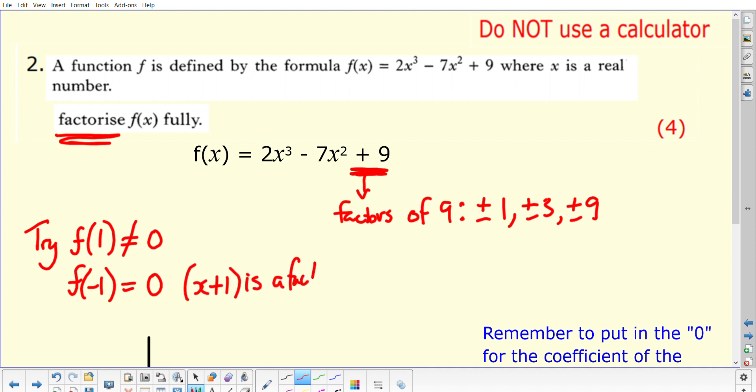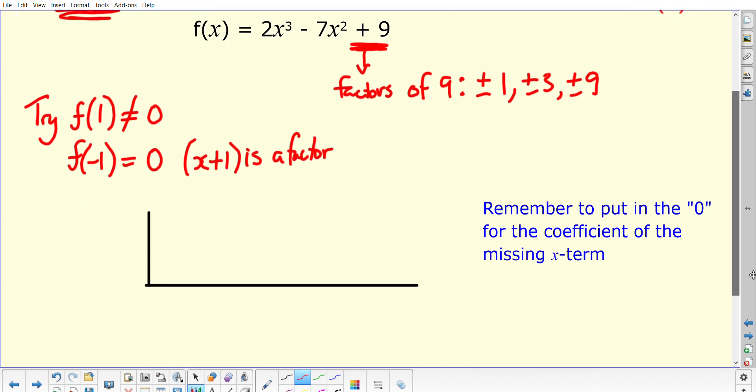Because that's zero, that tells us that x plus 1 is in fact a factor. That helps us get started because we can then do the nested calculation. When you're doing your nested calculation, remember it would be minus 1 that you would be using, and you put your coefficients in from your expression. The key thing here is there's your x cubed term, your x squared term is minus 7, but there's no x term. Because we put them in descending powers of x, if there are any missing terms you need to put their coefficient in as zero, not plus 9, which is the mistake quite a number of you made.